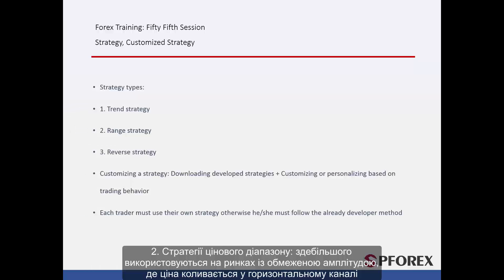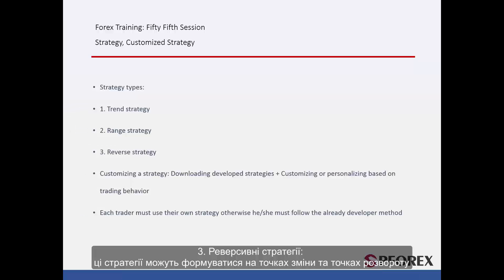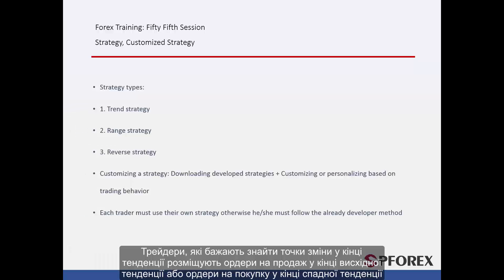Second, Range Strategies — mostly used in range markets in which price fluctuates in a horizontal channel. Third, Reverse Strategies — these strategies can be formed in reversal points and pivots, for traders who desire to find reversal points at the end of a trend to place a sell order at the end of an uptrend or a buy order at the end of a downtrend.